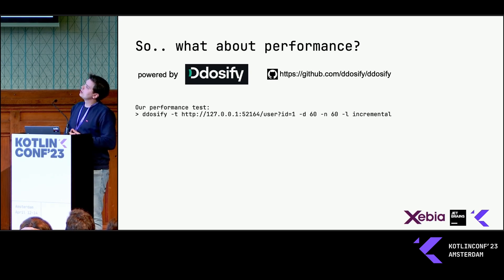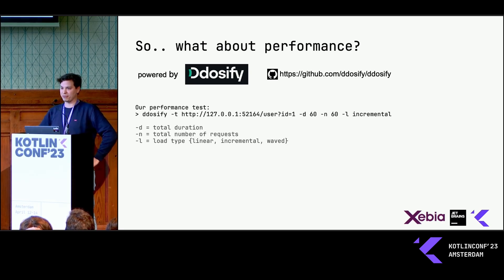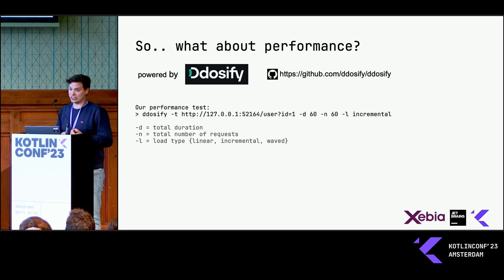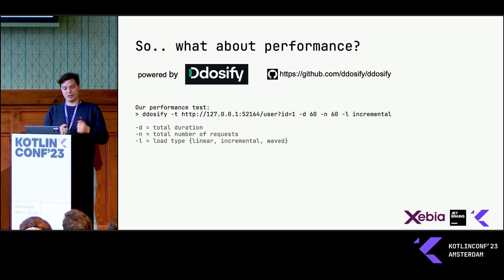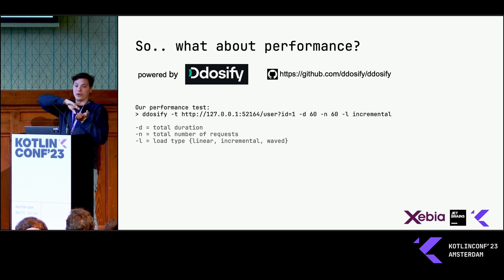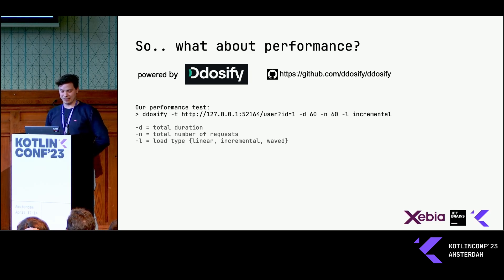Our performance test is just this command: DDOSify and then the URL I'm going to call — the GET route to get from the database. You have flags to configure the duration, how many requests you're going to do within that time frame, and how you want to spread out those requests over time. You can have linear, incremental — which is what we will do, turning up the volume gradually — or waves. I picked incremental.